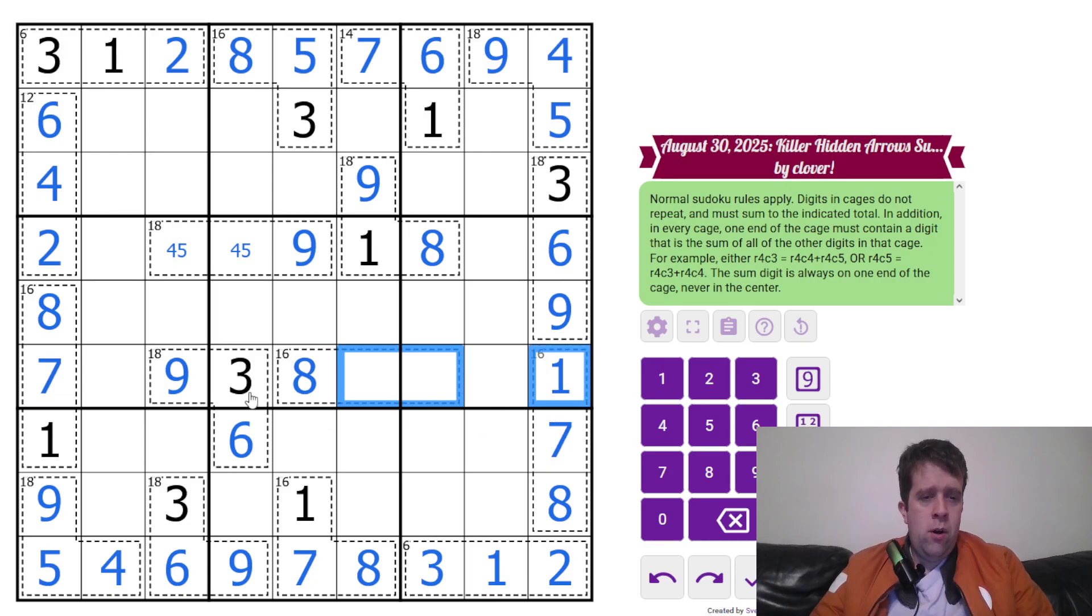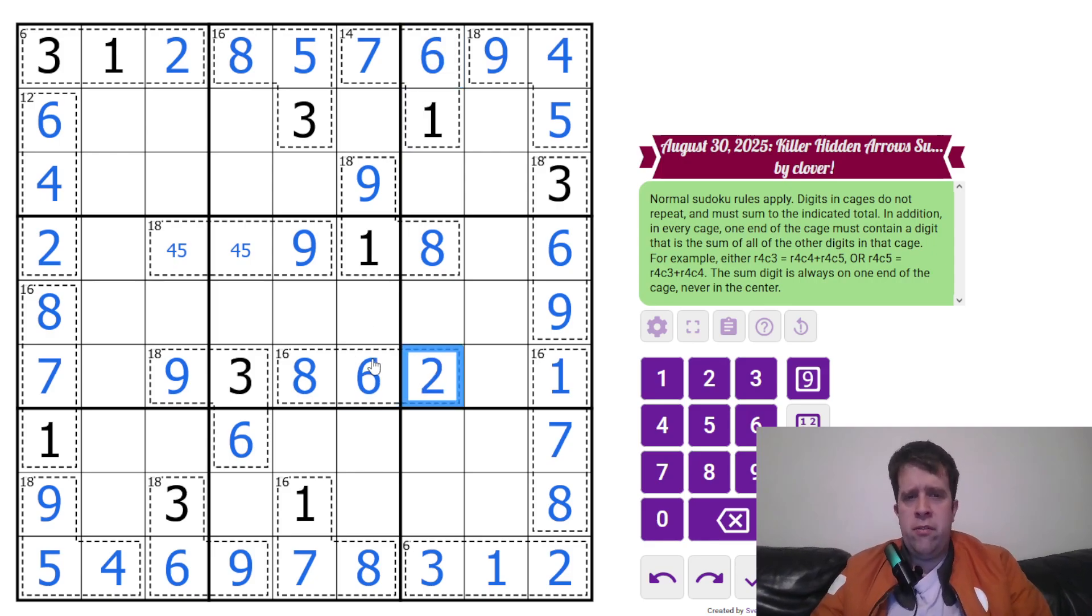It can't be one, seven, or three, five, so it must be two and six. Six is going to go here and do quite a bit of work for us. And that's all of the variant done. Let's see what we can do to finish off this puzzle.